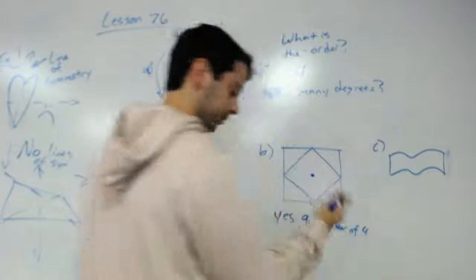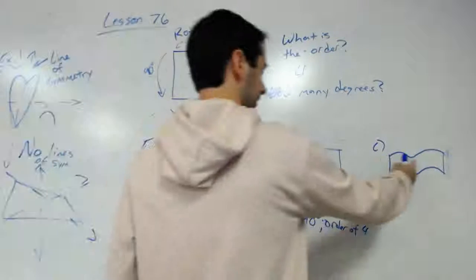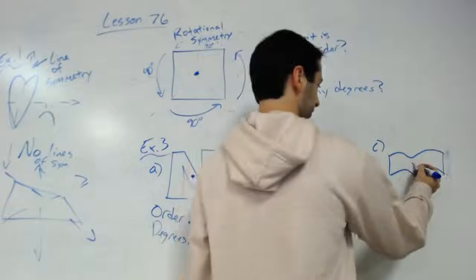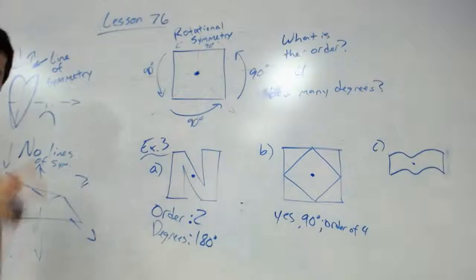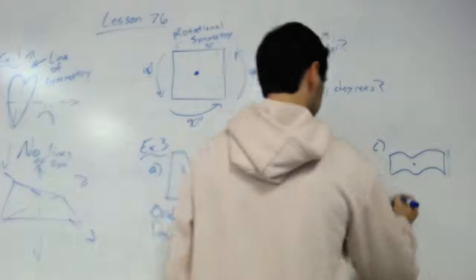However you want to write it, doesn't matter. I'll get the idea. Order four. And then the last shape is C. Would this have any rotational symmetry? Well sure if you did a full 360, but that does not count. It has to at least have two orders for it to count as rotational symmetry. So therefore we would say no rotational symmetry.